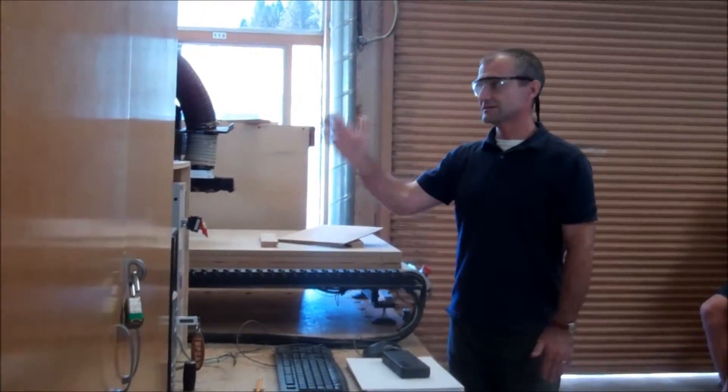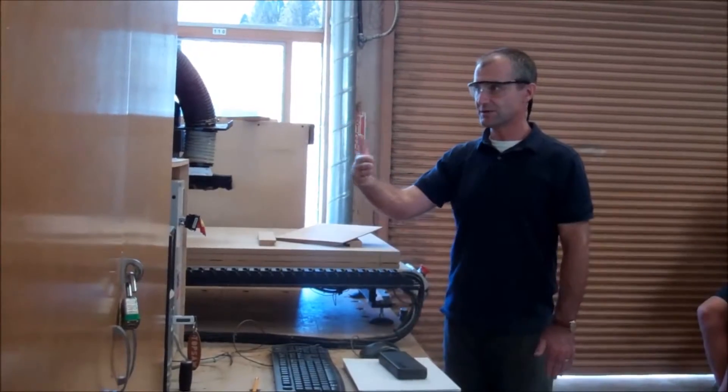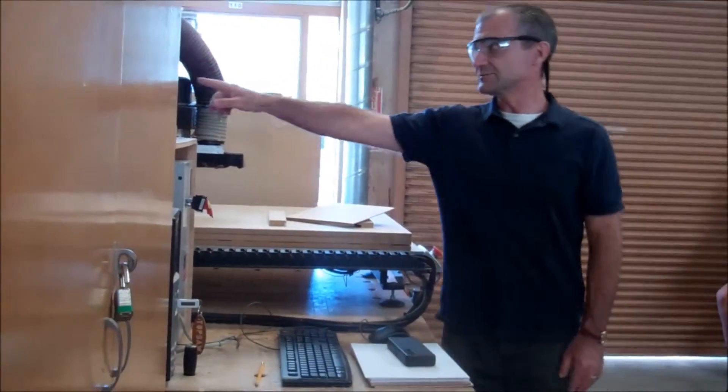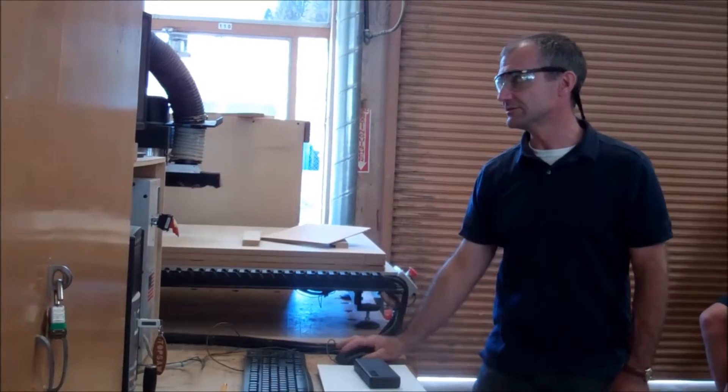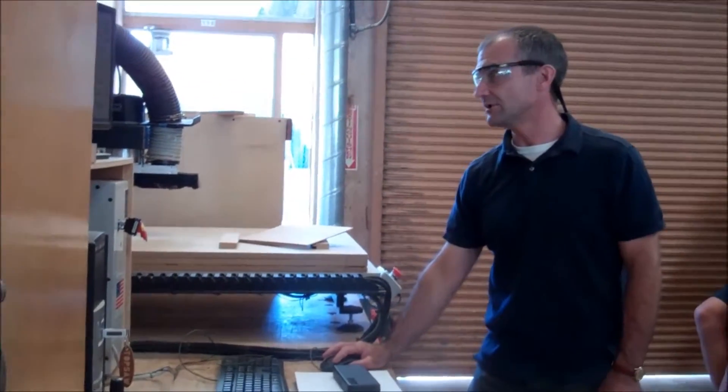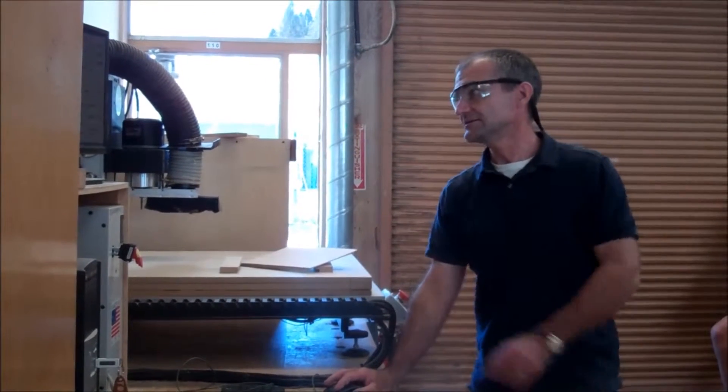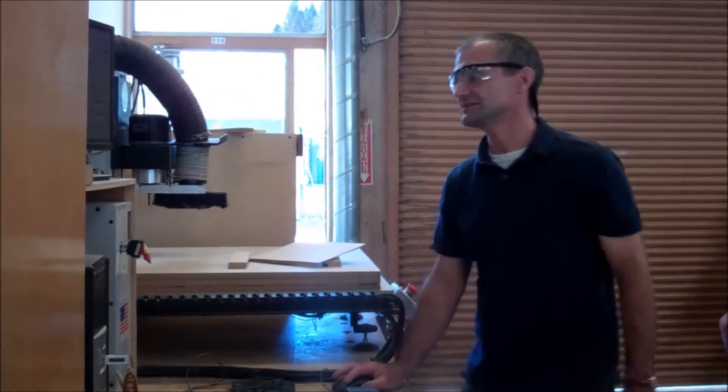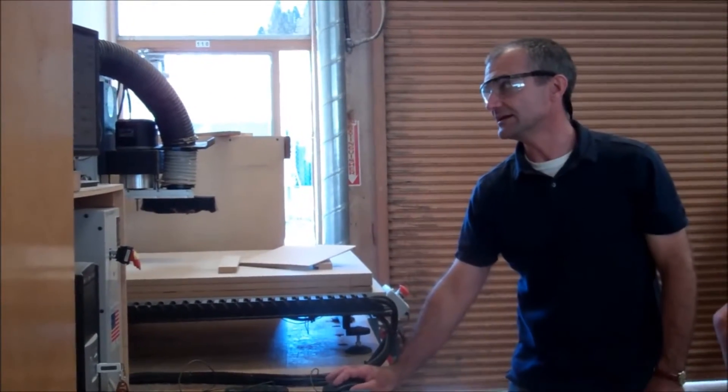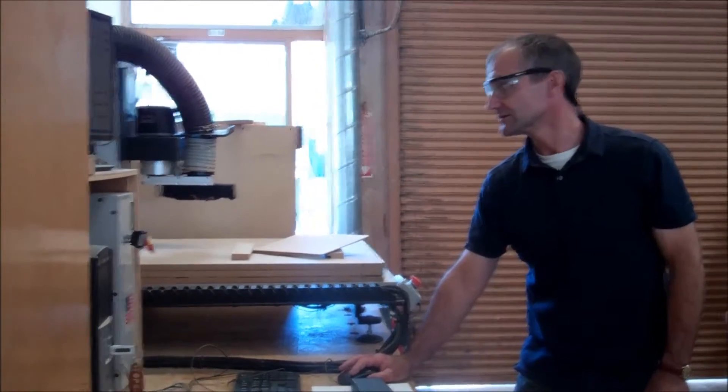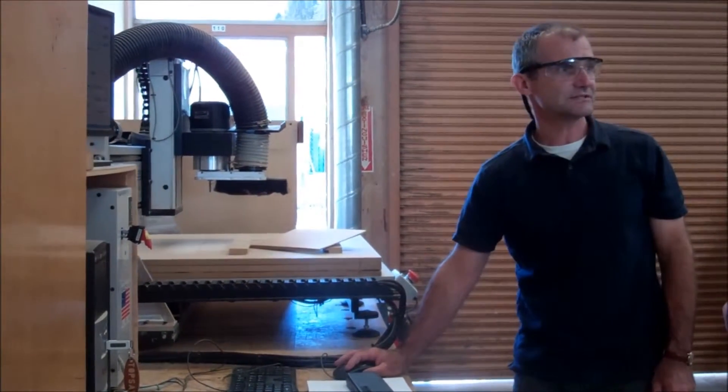This tracks this way in Y, this way is X, up and down is Z. Jog speed is inches per minute to travel. If I want to move this thing around in the Y direction, see how slow that's going? It's going 35.7 inches per minute. If I turn that up, it's now traveling at 200 inches per minute.